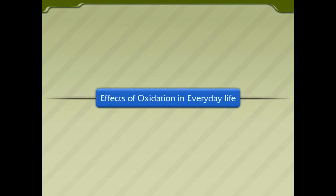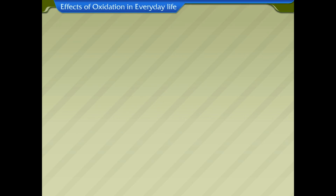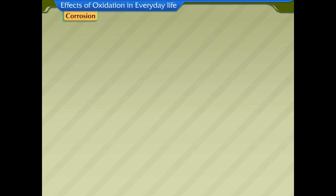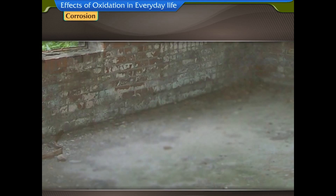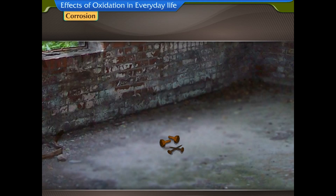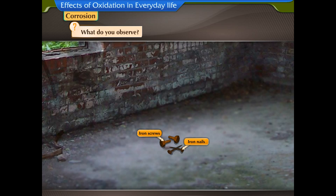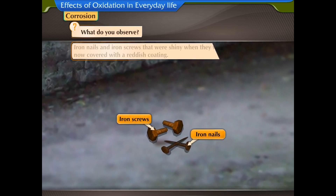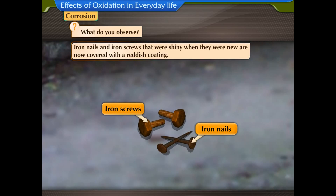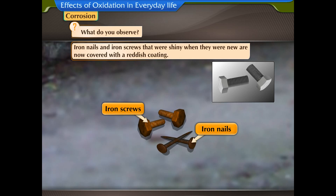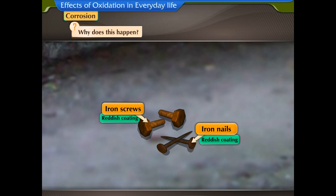Effects of Oxidation in Everyday Life. Corrosion. Take a look at some unused iron nails and iron screws at home. What do you observe? Iron nails and iron screws that were shiny when they were new are now covered with a reddish coating. Why does this happen?